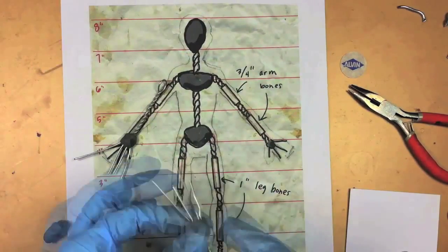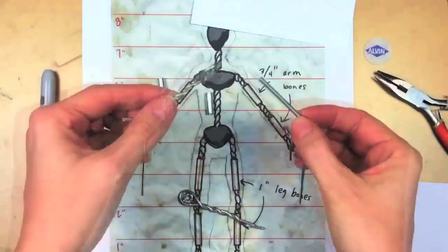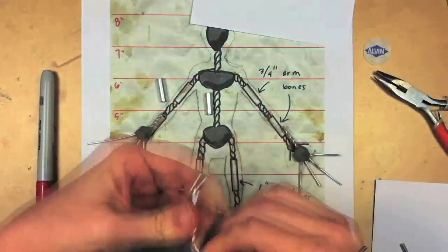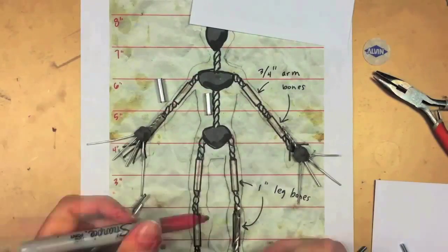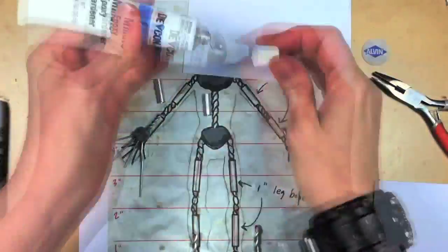I like to use K&S aluminum tubing for the bones. You can use round or square tubing. These bones are used to connect the hands and the feet to the body, and prevent the armature from bending in places you don't want it to bend.